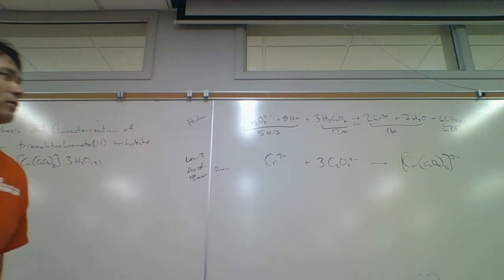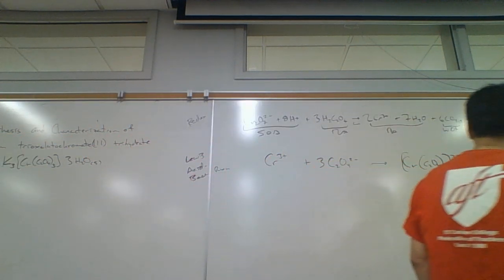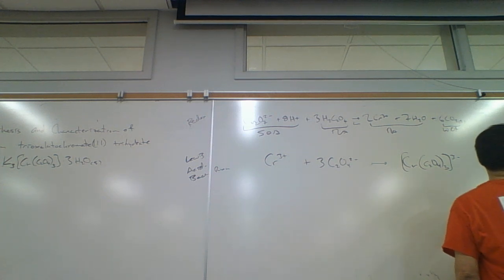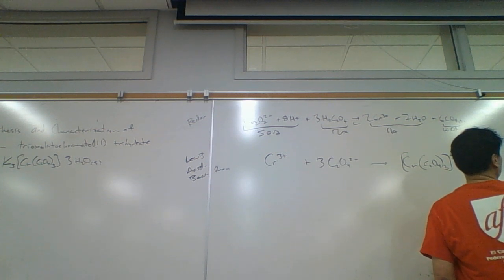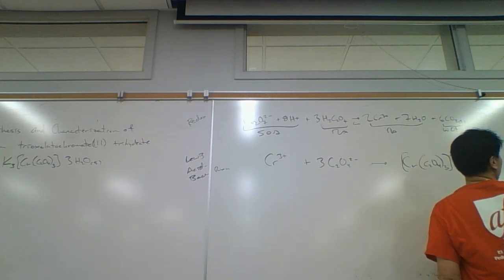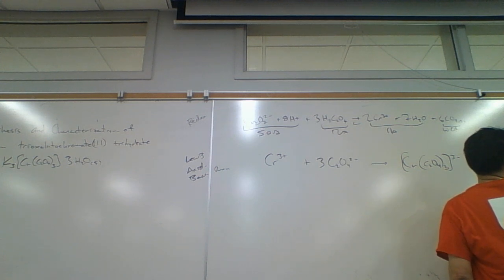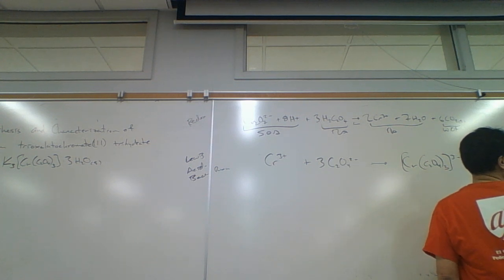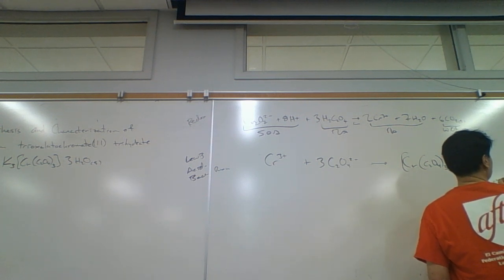Tri-oxalato chromate-3 — do you know what the coordination number of this is? Six. So it's going to be an octahedral arrangement. And each oxalate is bidentate. We'll have three oxalatos.